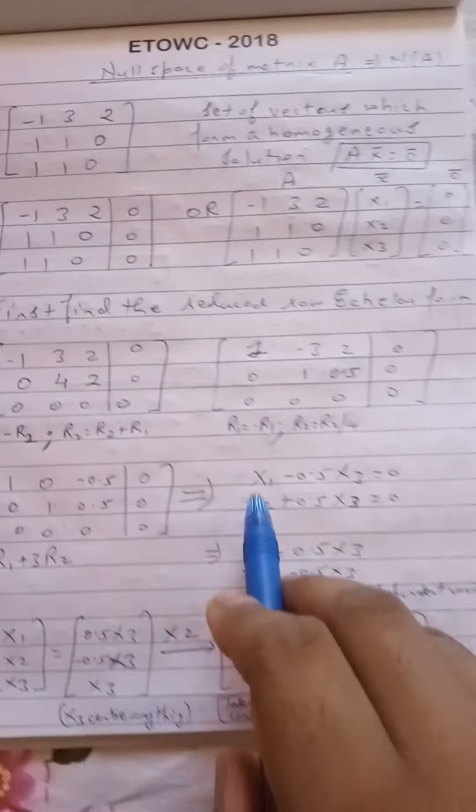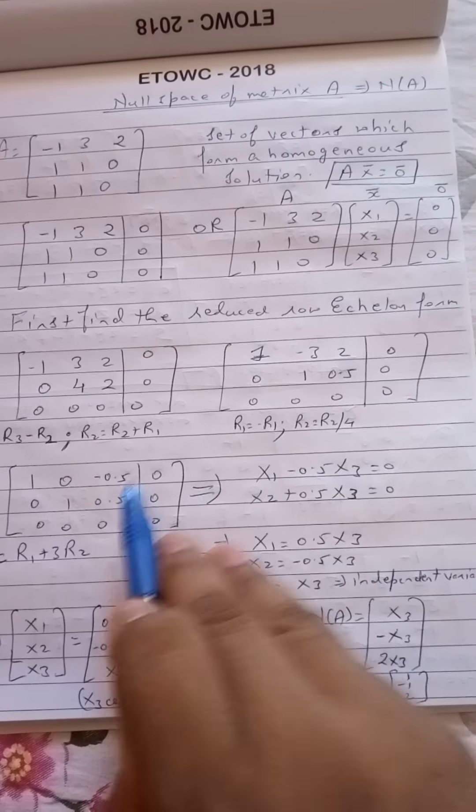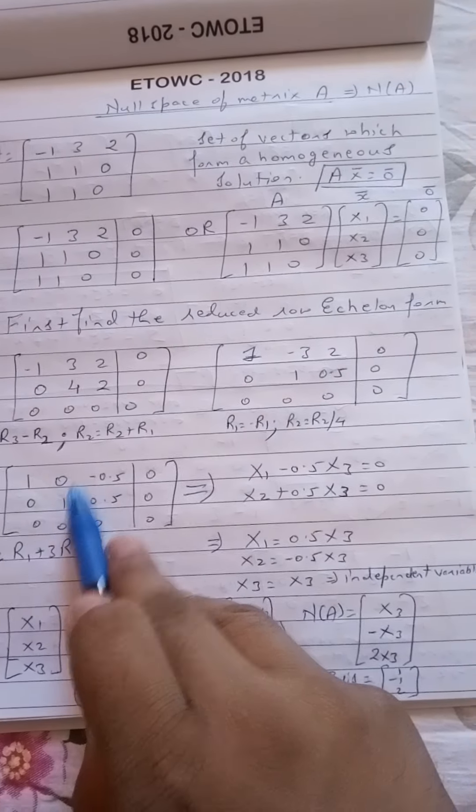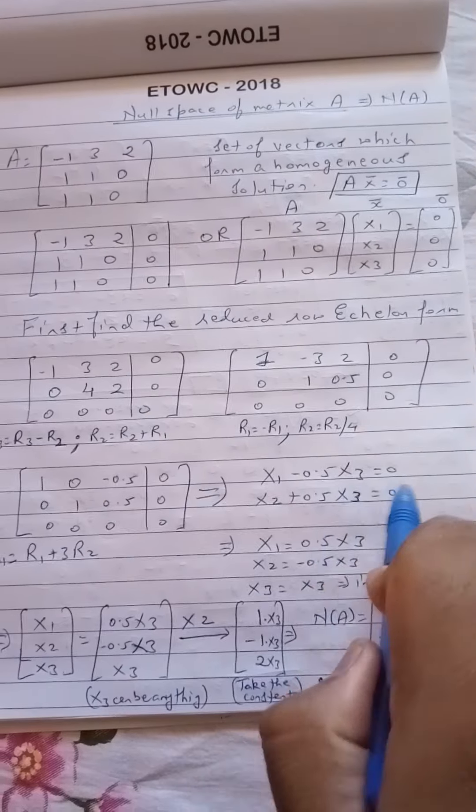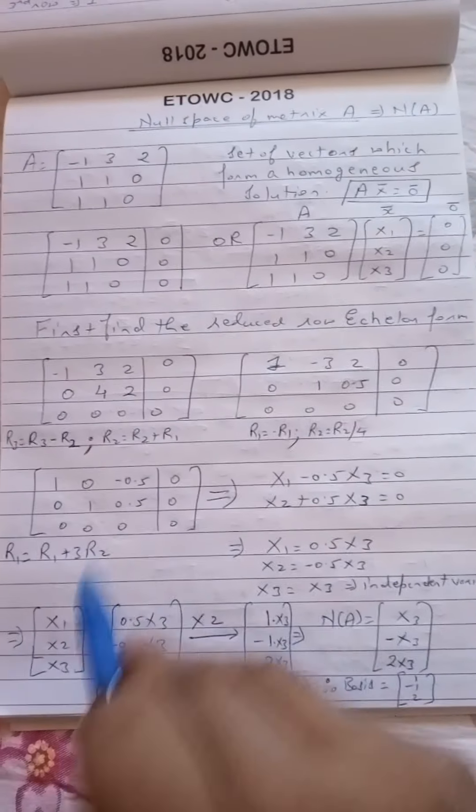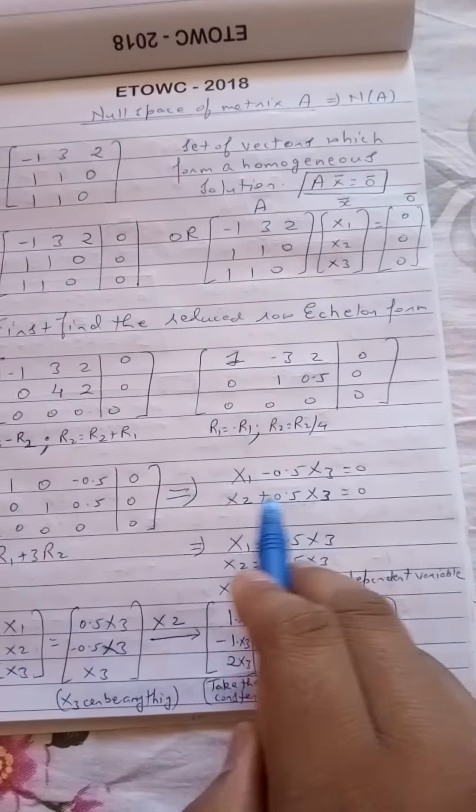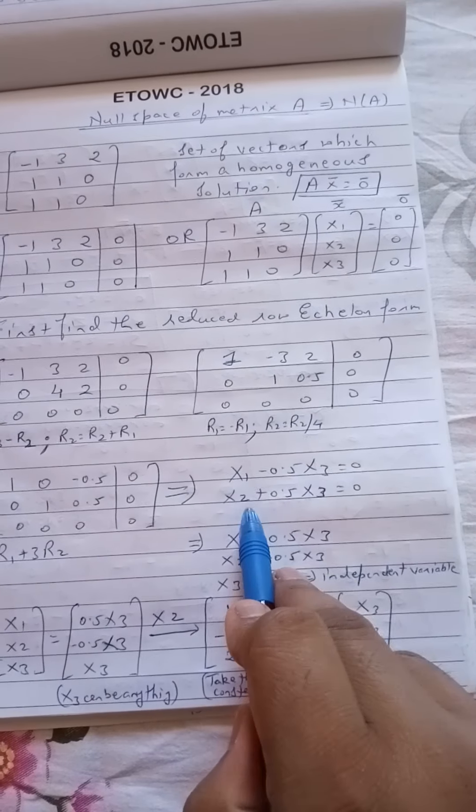So now you take this matrix and write it in the form of equations. So you have X1 minus 0.5 X3 equal to 0. From this line X2 plus 0.5 X3 equal to 0. There is no equation here.